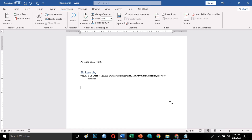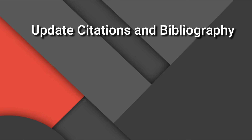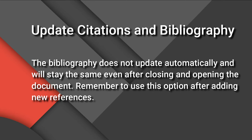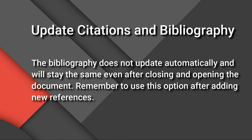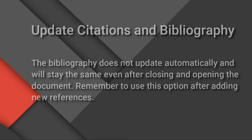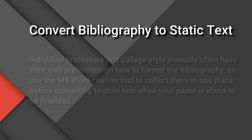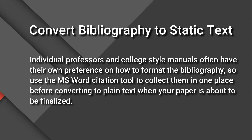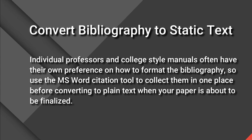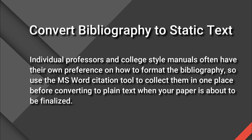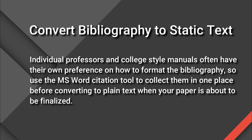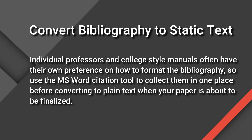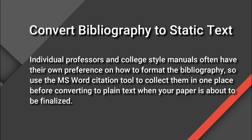When you hover your cursor over it, a drop-down box appears with the following options. Update Citations and Bibliography: the bibliography does not update automatically and will stay the same even after closing and reopening the document, so remember to use this option after adding new references. Convert Bibliography to Static Text: individual professors and college style manuals often have their own preferences on formatting, so use the MS Word citation tool to collect them in one place before converting to plain text when your paper is about to be finalized. Note that after converting, it will stay as plain text and you lose the Update button — you will have to create a bibliography again if you want to regain the update functionality.